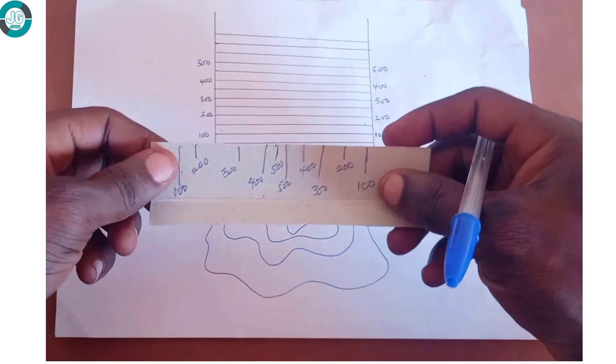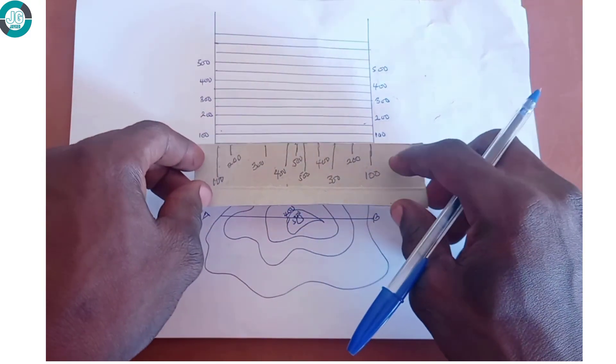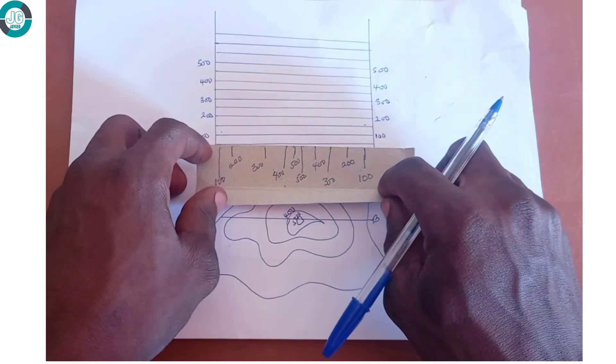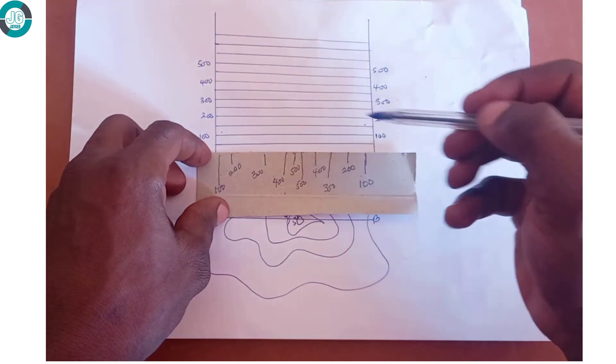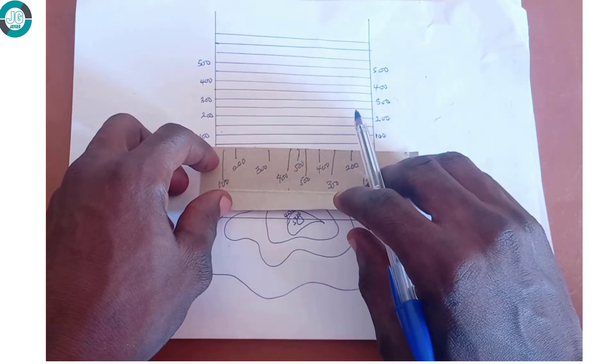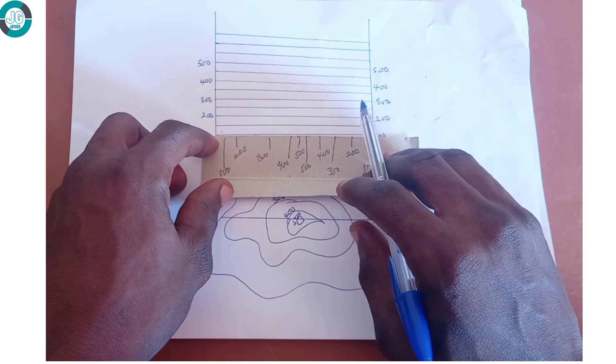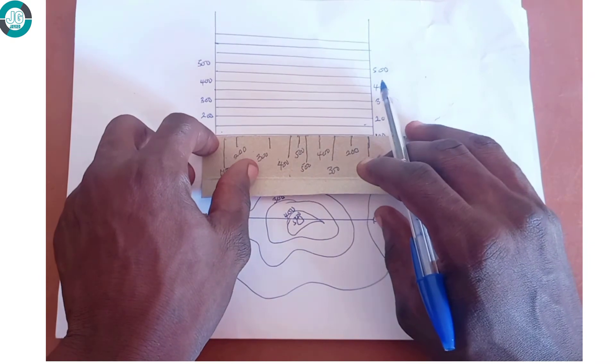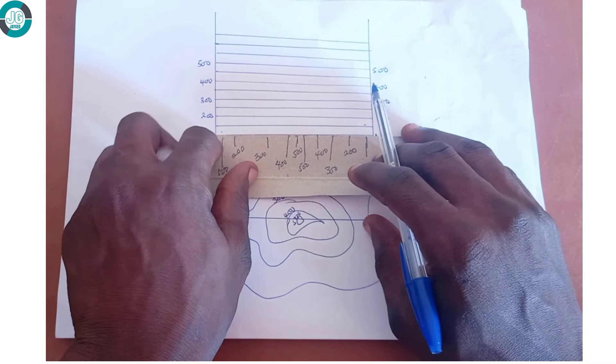So once again, we place our strip of paper on the graph. We are going to place it on the line AB. We place the strip of paper containing our contour values on this line so that we'll be able to draw the points on the graph. While keeping the paper in line with line AB, we move the paper up to the first numerical contour value, which is 100.